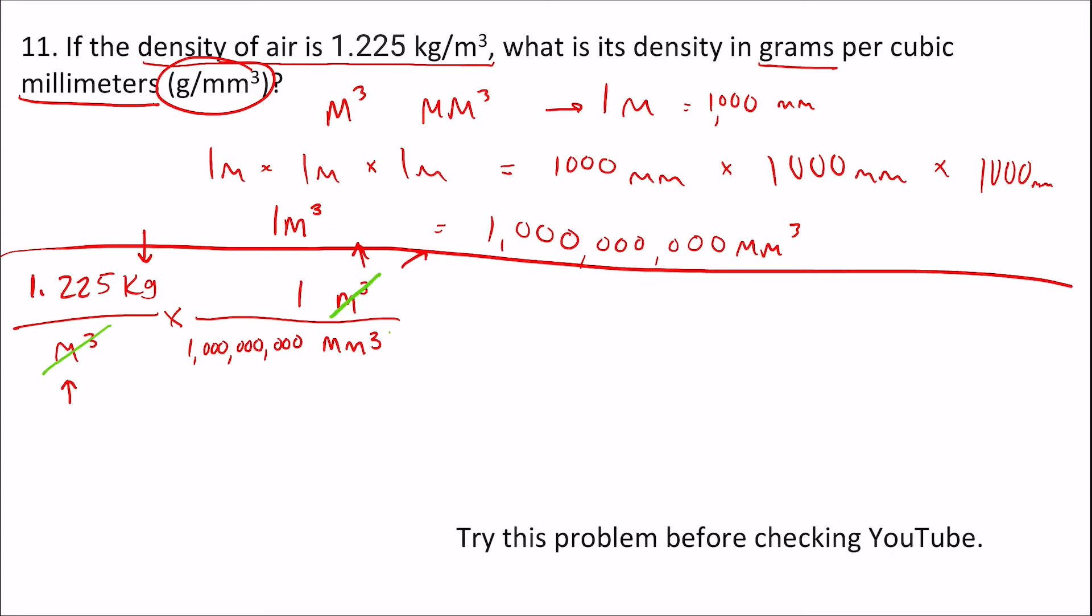Now to get rid of the kilograms, we're going to put kilograms on the bottom, and we're looking for grams, so we're going to put grams on the top. So one kilogram, one thousand grams. Kilograms cancels out, leaving us with grams on the top. So now our units are grams per cubic millimeter.